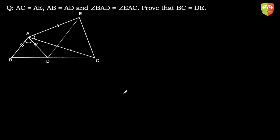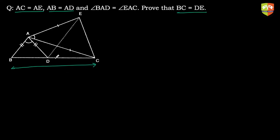Welcome to another problem solving session on congruent triangles. In this question, it's given that AC is equal to AE, AB is equal to AD. Angle BAD is equal to angle EAC. We have to prove that BC is equal to DE. So first, let's find BC and DE — BC is this side, and DE is this side — and we need to prove these two are equal.